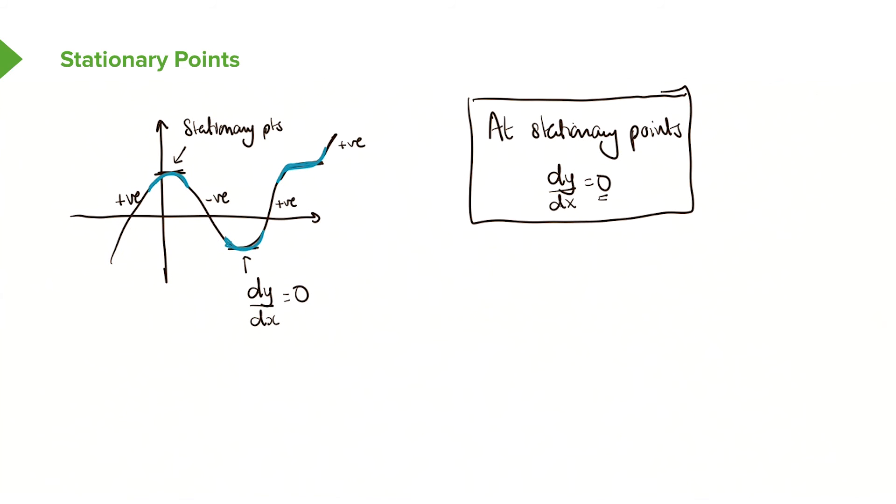So how do we distinguish between those three types of stationary points? Yes, we can find the coordinates of the stationary points when we equal our gradient to zero. But how do we actually find those three types of points? So let me just see if I can show you the three types of points. You have a point that looks like that, a point that looks like this, and a point that looks like this. And remember that this point could also look like so.